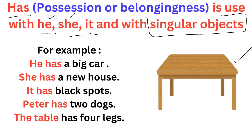Has is used with he, she, it, and with a single thing — it seems like one thing. Has is used with he, she, it, and with the singular objects.